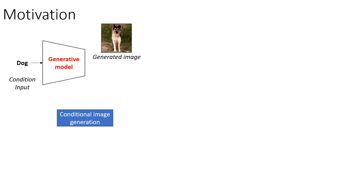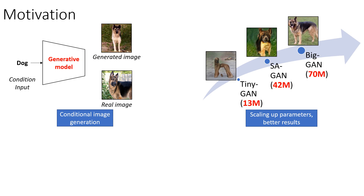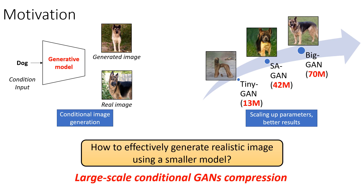Conditional image generation is producing an image according to the input class condition. The generated image is expected to be hard to distinguish from the real one. Though recent work shows impressive results, they lead to parameter explosion, limiting their adaptation to usage under real scenarios such as mobile devices. In this study, we question how to effectively generate the relative image using a smaller model, and therefore we introduce a new task of large-scale conditional GANs compression. Our task requires reducing the size of the GAN model while achieving compatible results to the state-of-the-art. This is a new branch of neural network compression.